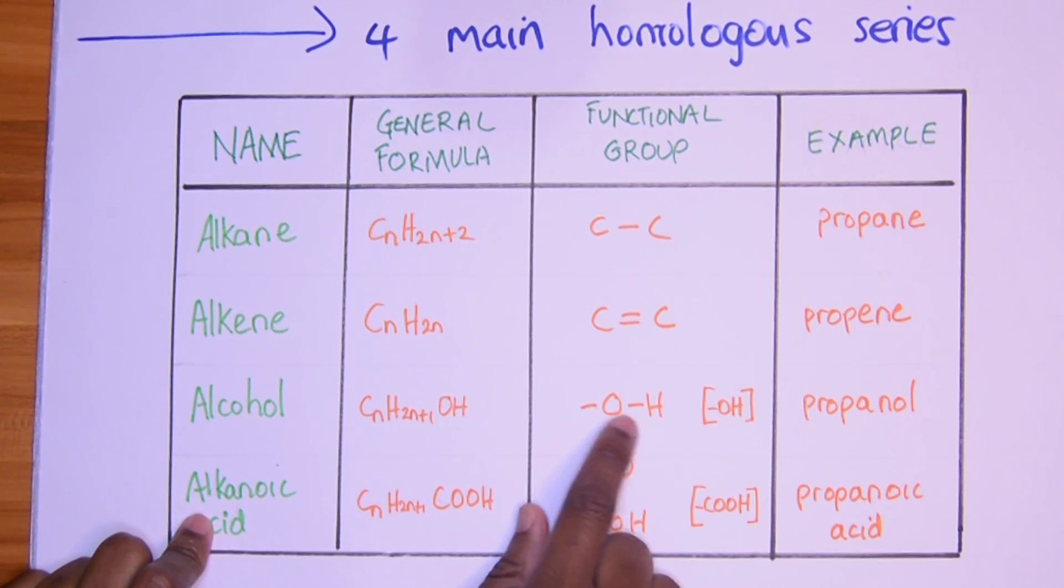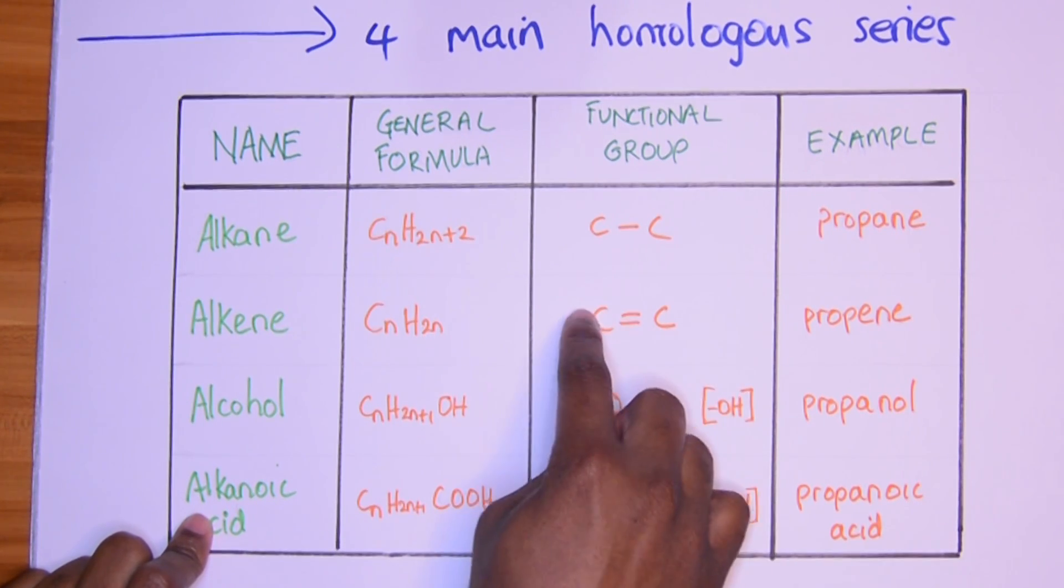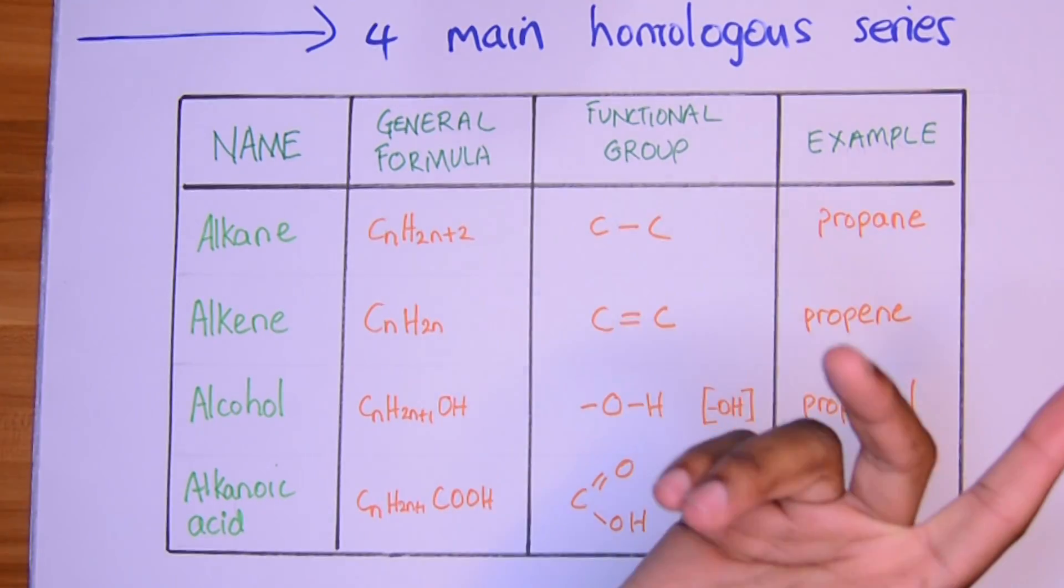So we have C, and then the next is O-OH. C double bond O-OH. C double bond O-OH. OH, C double bonds and single bonds.